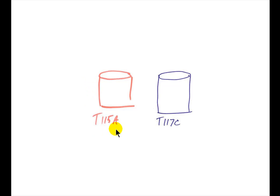So, T115A is probably a PI tag that records the level of that tank. T117C may be a second tag that's measuring the level of this other tank.